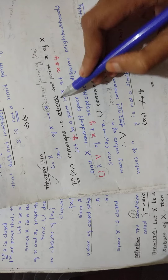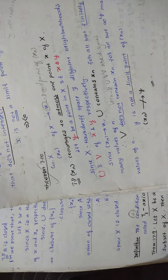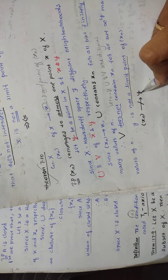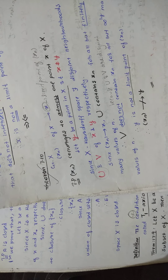To prove: XN converges to at most one point x of X. What you will do is take another point, y, and at the end you will show that XN is not converging to y. To prove that, you need to take a point other than x — only then can you say the sequence is not converging to any point other than x. That is our target.